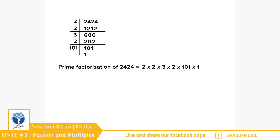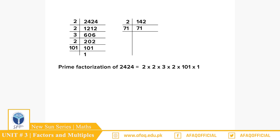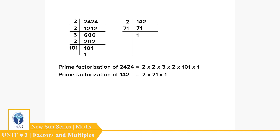142 کو 2 پر divide کریں تو 71 آیا، 71 کو 71 پر divide کریں تو 1 آیا۔ اس طرح 142 = 2 × 71 × 1۔